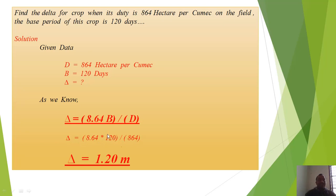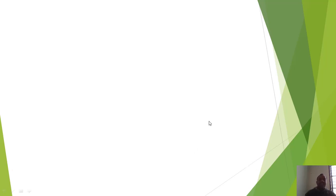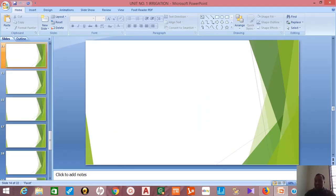Put the values of B and D, we'll get delta equals 1.20 meters. If you like the video, please do share it and subscribe the channel. Watch videos carefully to get the knowledge.